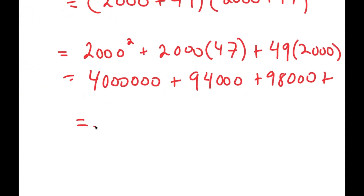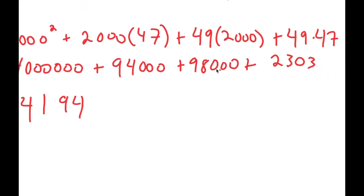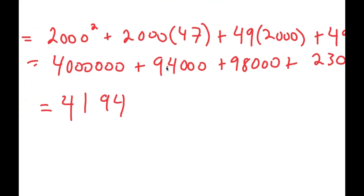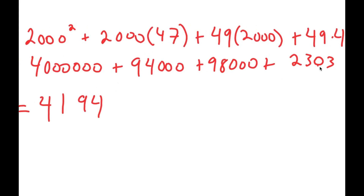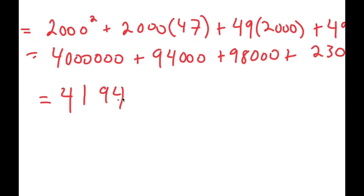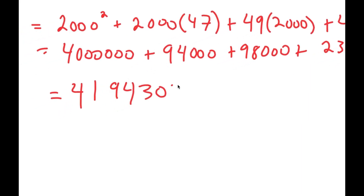Now, 2000 squared is 4 million, plus 47 times 2000 is 94,000, plus 49 times 2000 is 98,000, and finally, 49 times 47 is 2,303. By adding all these up, I get 4,000,000 plus 194,000 — because 94,000 plus 98,000 is 194,000 — and then adding 2,303, I get 4,194,303.